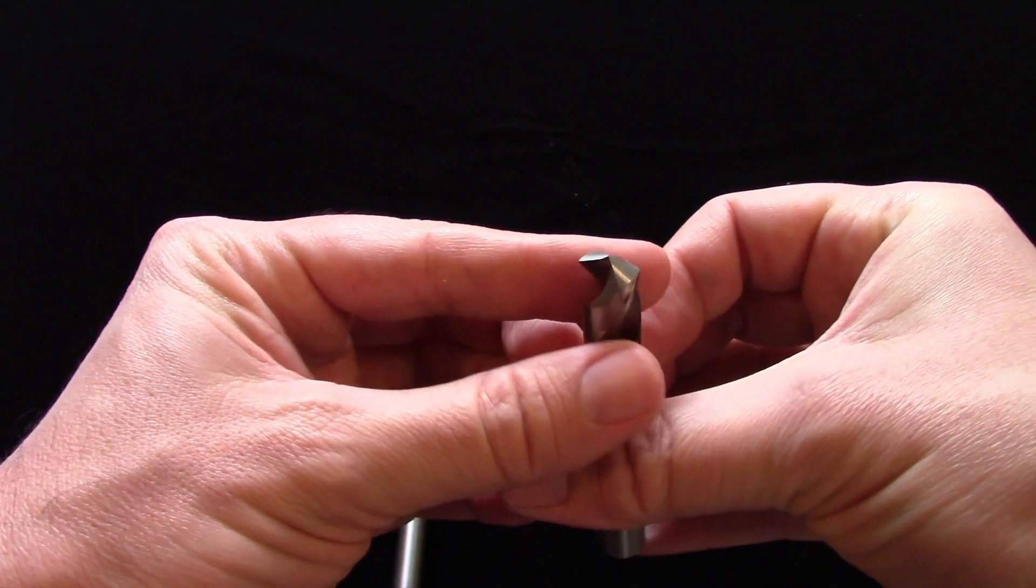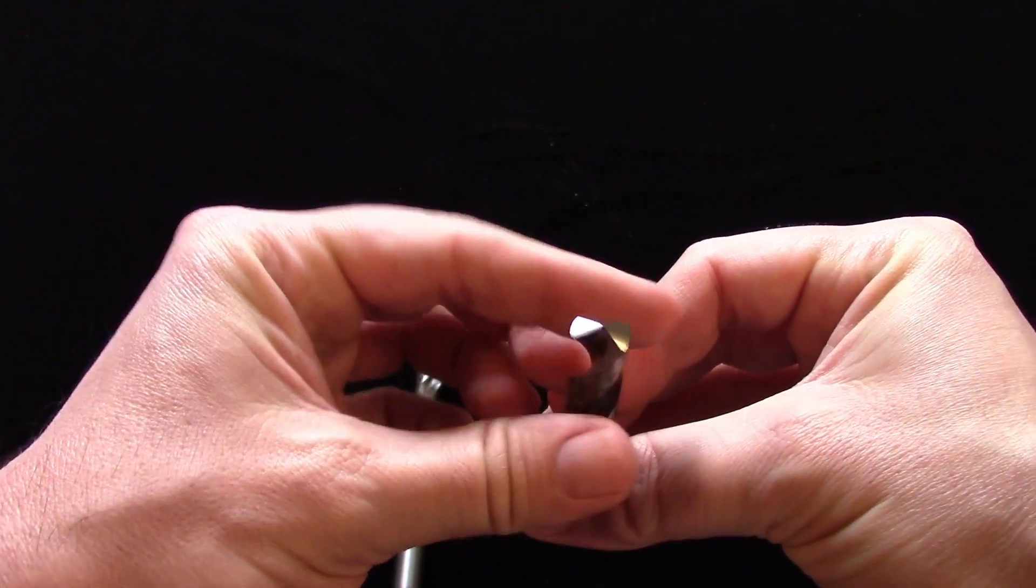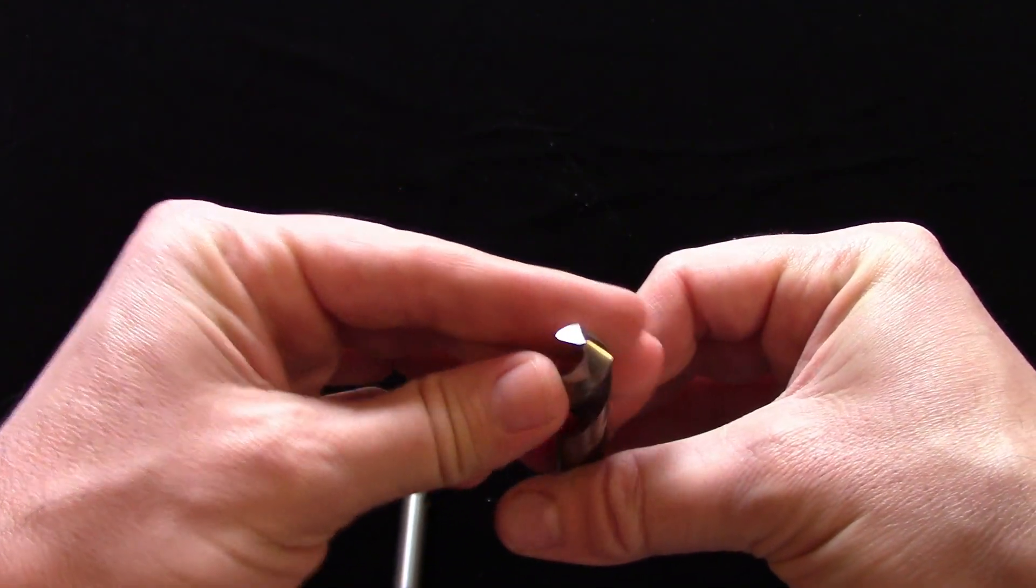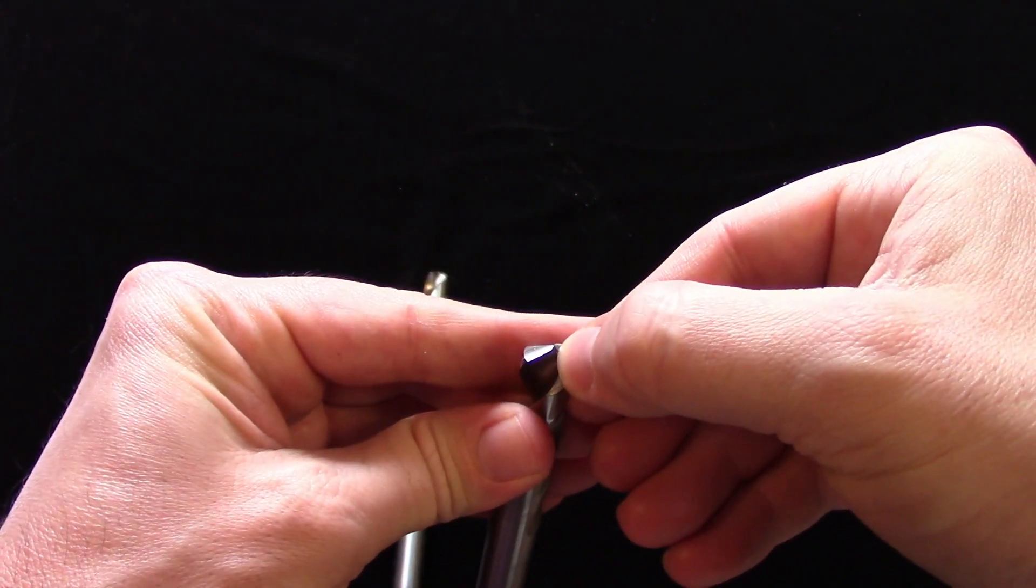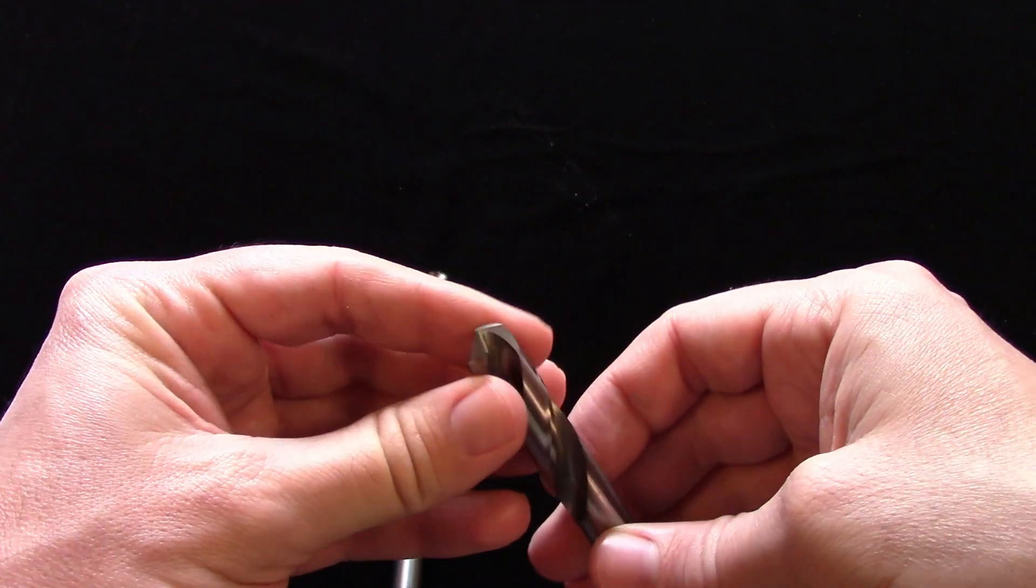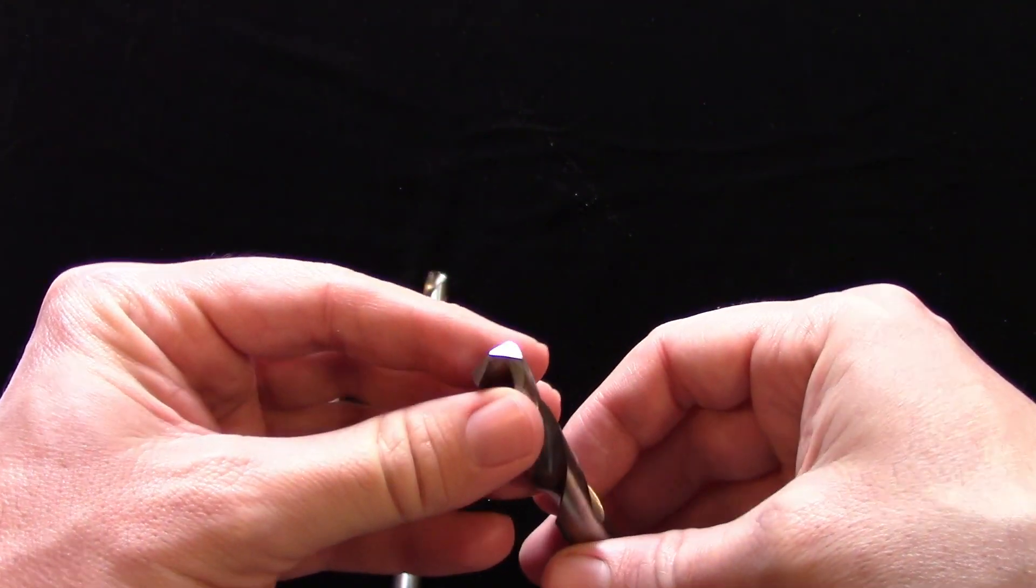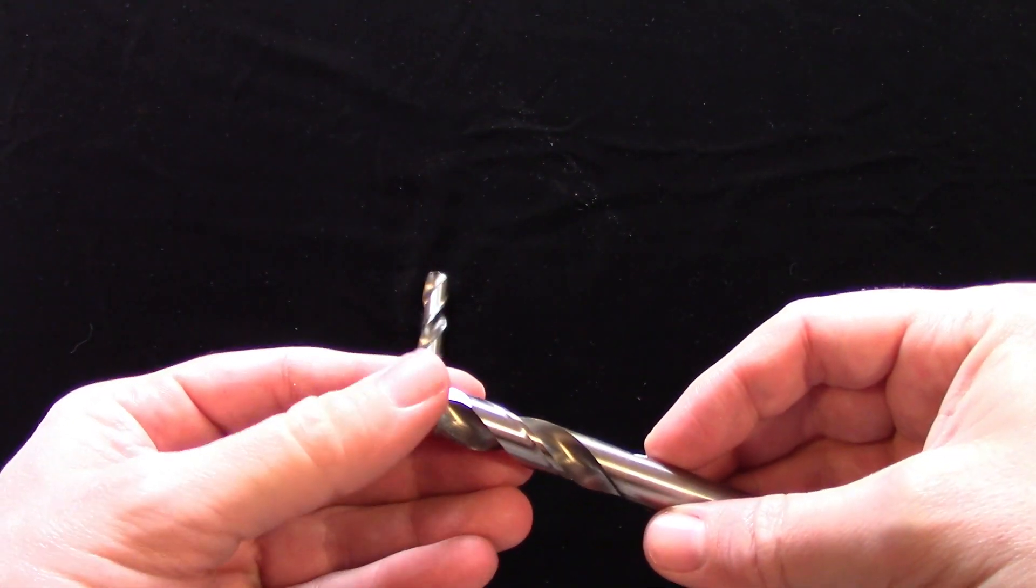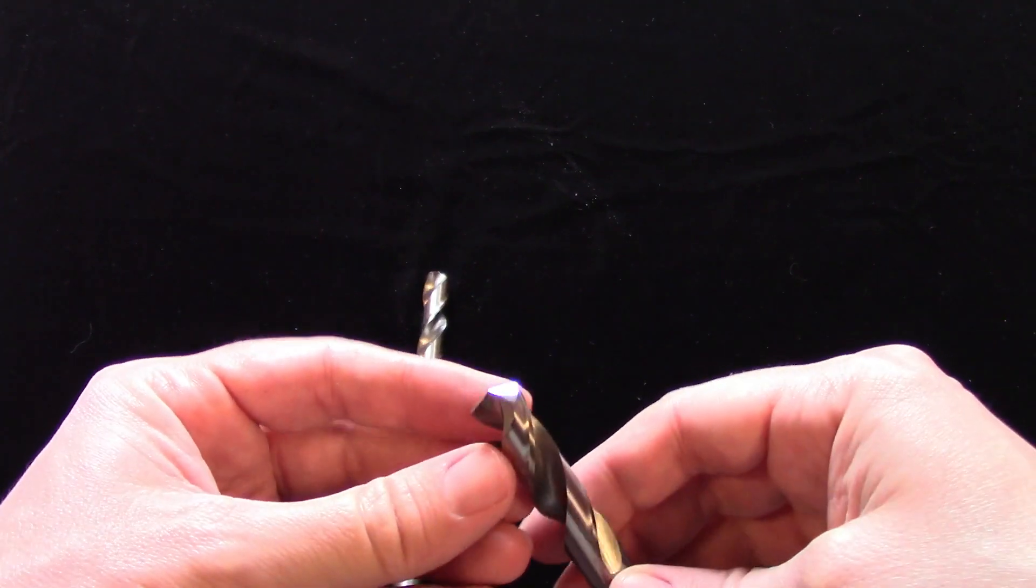135 degree split point drills avoid this to a degree by relieving the drill on either side of the chisel point, so the hole starts easier and with less pressure. This tip grind is recommended for drilling harder materials, since the flatter angle of the tip results in shorter cutting edges and less friction.